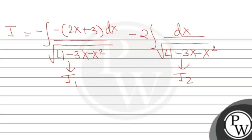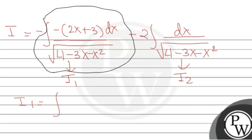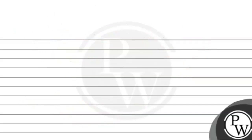Let's find I1 first. For I1, we have the integral of (2x + 3) upon √(4 - 3x - x²) dx. Notice that 2x + 3 is essentially minus the derivative of the expression inside the root. We use the substitution u = 4 - 3x - x², so that du = -(2x + 3) dx.